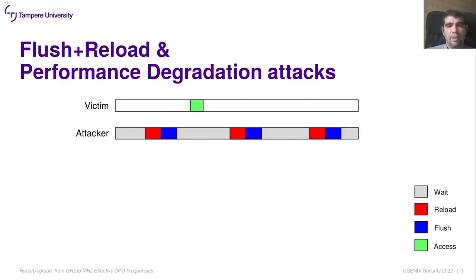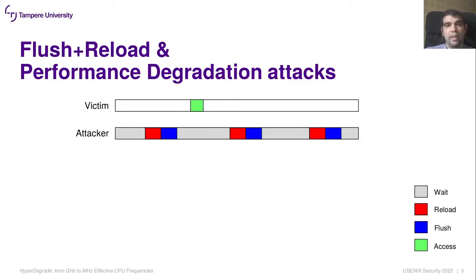Let's begin with an informal introduction to the Flush+Reload cache attack. The victim executes some memory address — the green box in the chart — that the attacker wants to track. The attacker periodically executes a Flush+Reload cycle, shown as the blue and red boxes in the picture, to query if the target memory address was accessed or not. In practice, the temporal resolution of the attack is limited, hence the waiting period gray area is lower bounded.